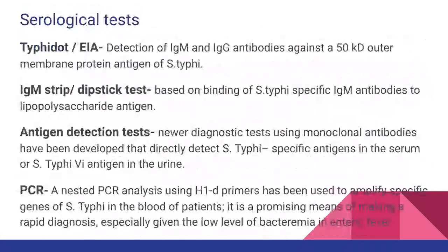Newer tests include Typhidot, IgM strip test, antigen detection tests, and PCR. In PCR, specific genes are amplified so even low-level bacteremia is better detected by this method.